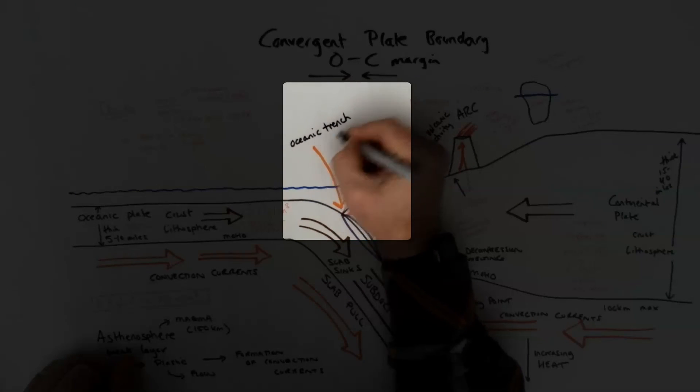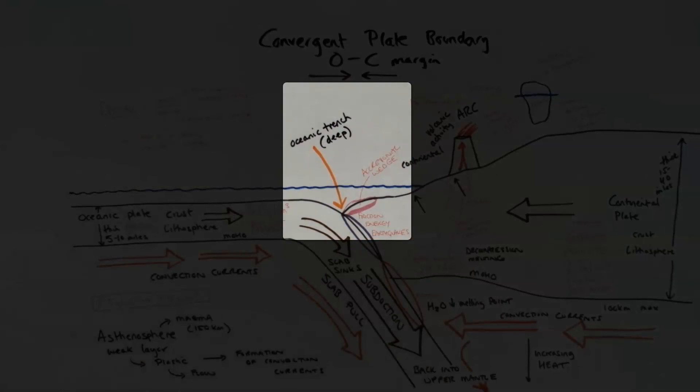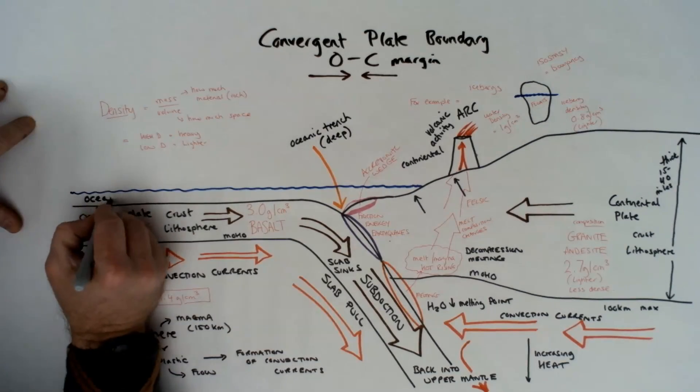And here we have the general overlook and holistic view of the convergent plate boundary, oceanic to continental.